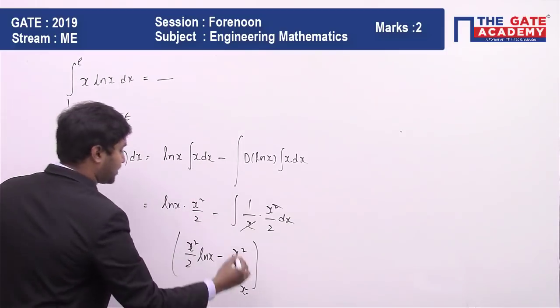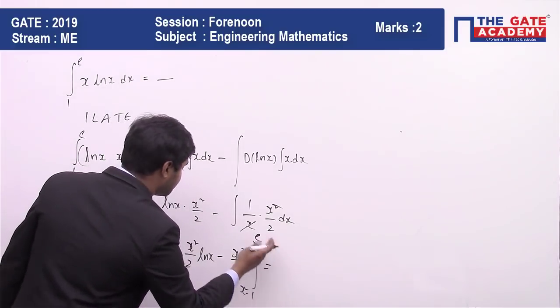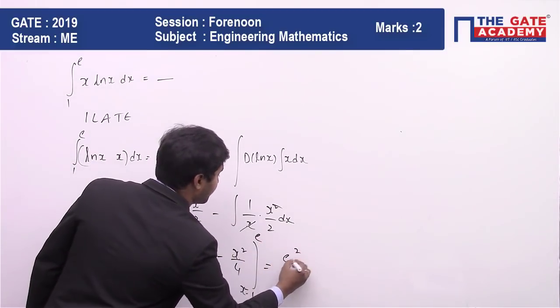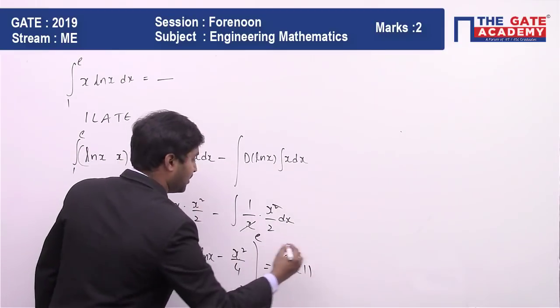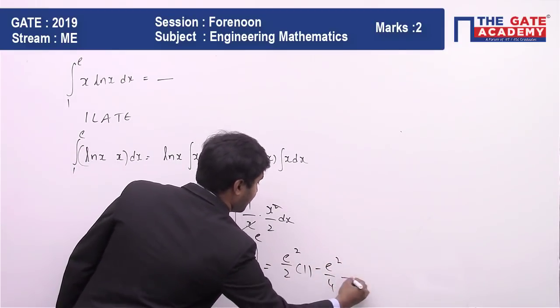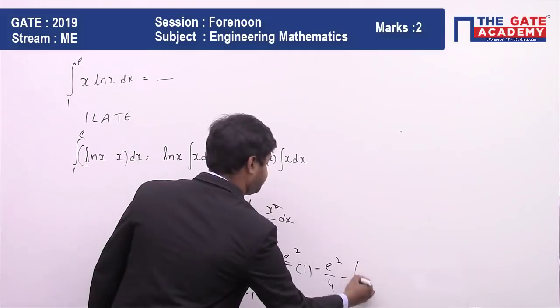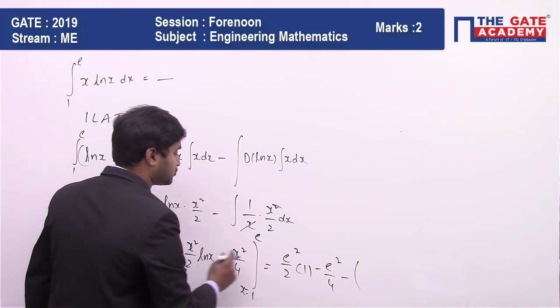If I substitute e, I am going to have (e²/2) multiplied by 1 minus e²/4. Minus, when we put ln(1), it is going to be 0.